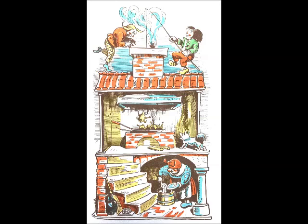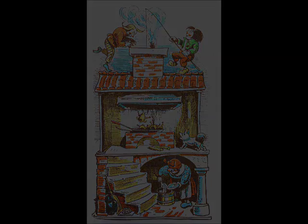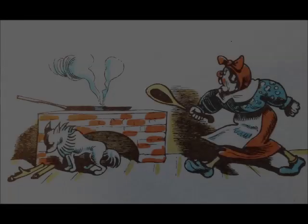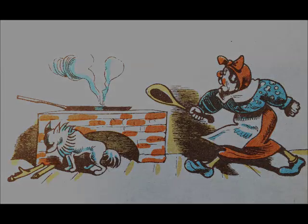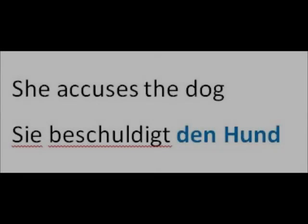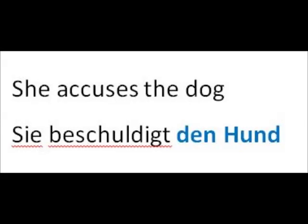Here we see them stealing Mrs. Bolte's chickens from the frying pan while Mrs. Bolte is in the cellar. When Mrs. Bolte returns, she of course thinks her dog is the guilty party — she accuses the dog.